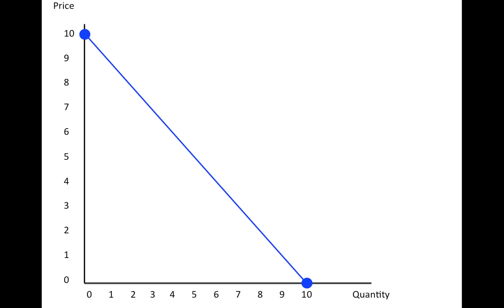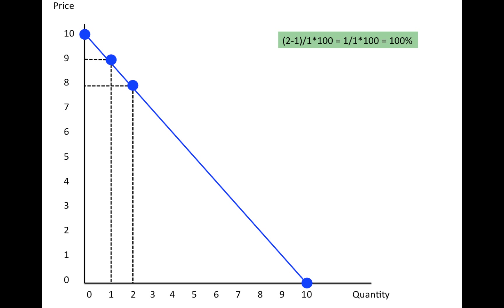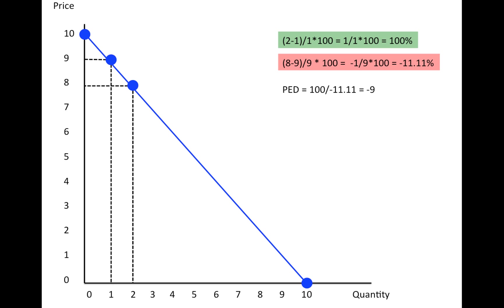Now, first, let's see what happens when we reduce the price from 9 to 8 and quantity increases from 1 to 2. As we've calculated before, the quantity demanded has increased by 100%, the price has reduced by 11.11%, and therefore the PED is equal to minus 9, which is relatively elastic.